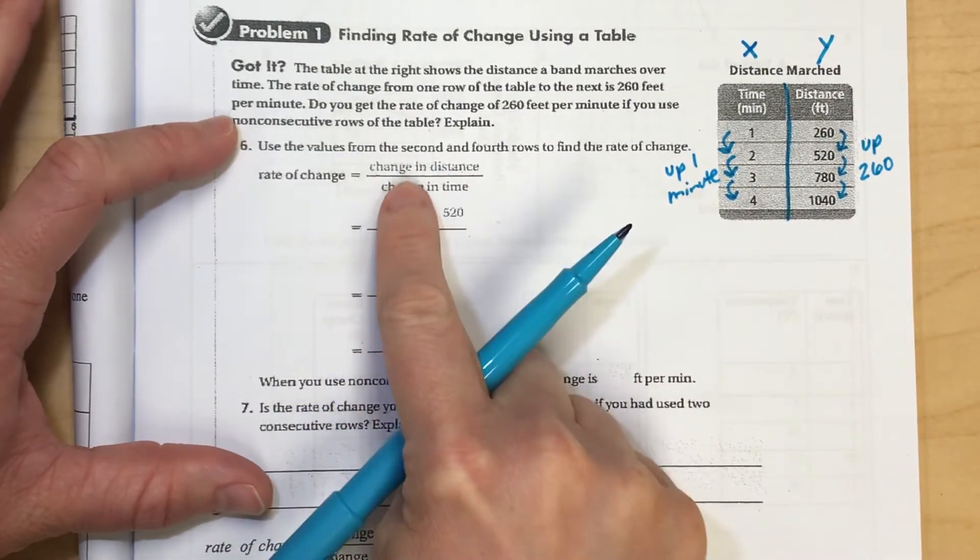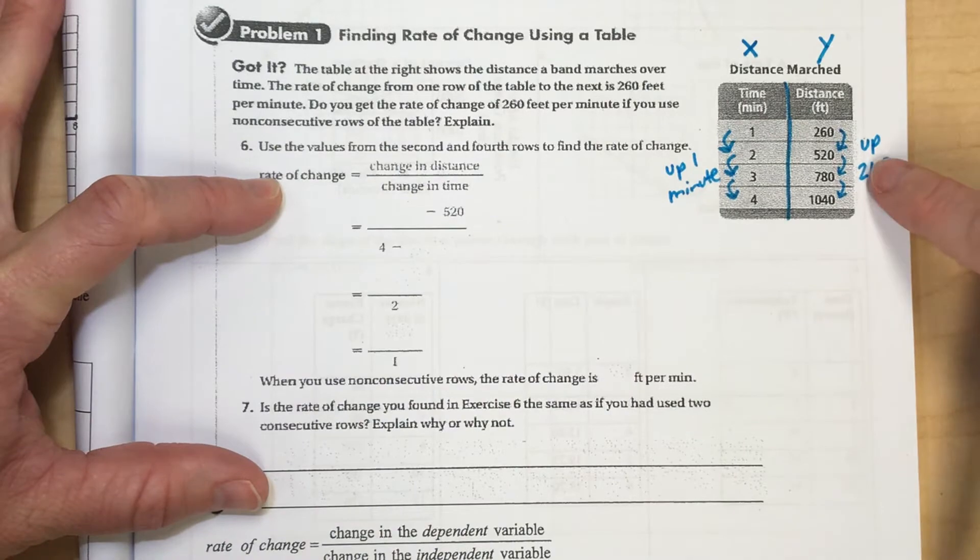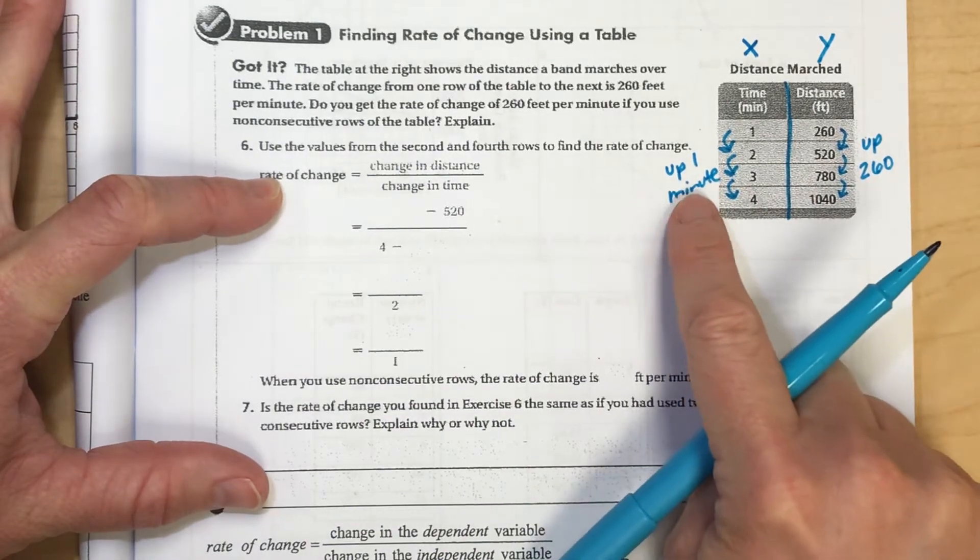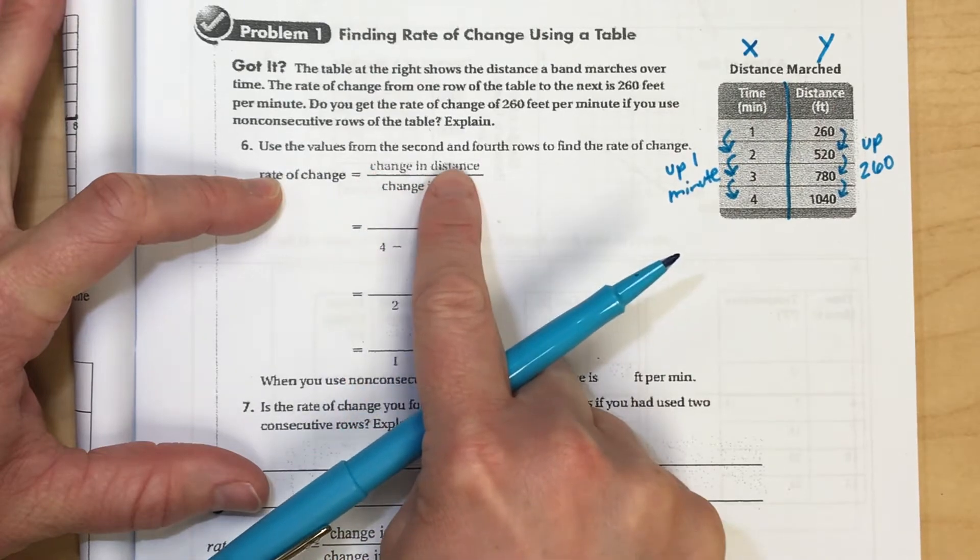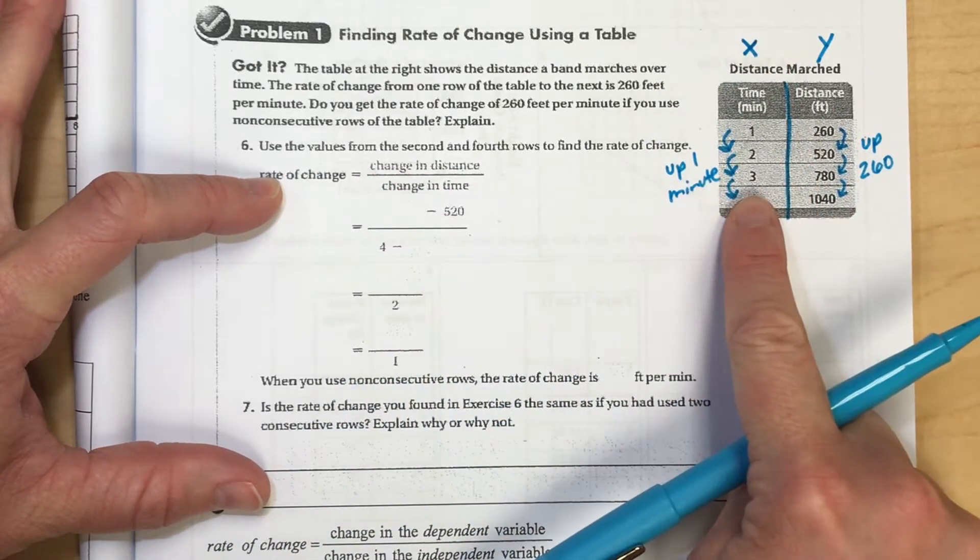Now, our slope formula is the change in the y's per the change in the x. And so in this case, if my y is distance, I'm going to track the changing of the distance versus the changing in the time of the table.